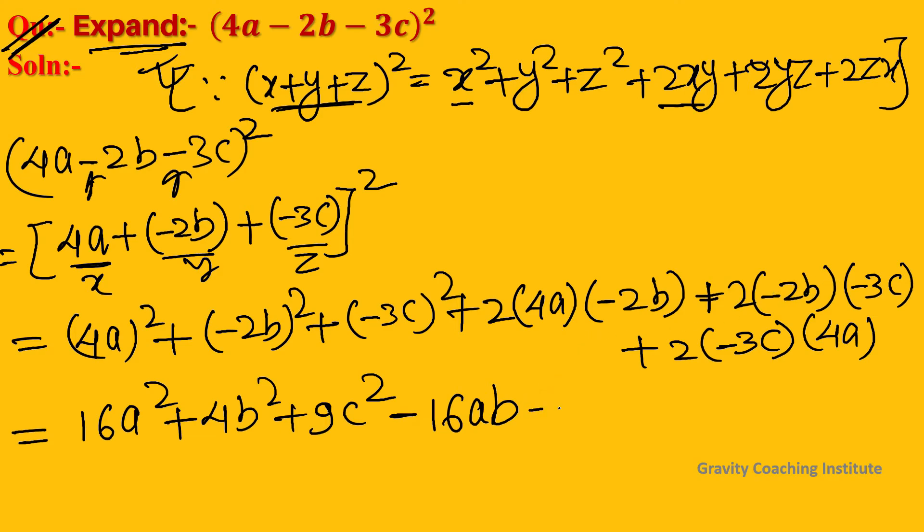Multiplying the numbers gives +12bc. For the last term, plus times minus gives minus, resulting in -24ca. This is the required answer: 16a² + 4b² + 9c² - 16ab + 12bc - 24ca.